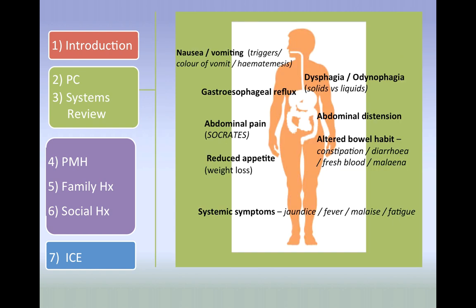Moving on to a focused history — this is a great way to pick up on symptoms the patient may not have mentioned or forgotten. For a GI history, we focus on gastro complaints and symptoms, touching on other systems if time permits. I think of a 'little man' to work through symptoms logically. Key ones to ask about include nausea and vomiting — always ask about the content, colour, consistency, and frequency of the vomit. Dysphagia: does the patient struggle to swallow, and is that with food or liquids? Abdominal pain is very common — don't forget to SOCRATES this, as there are multiple causes.